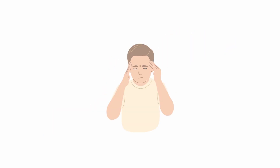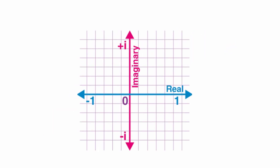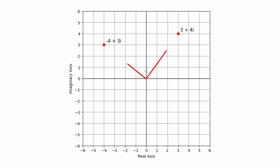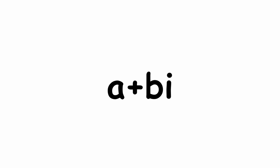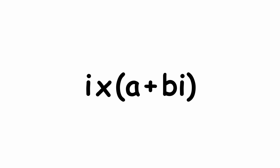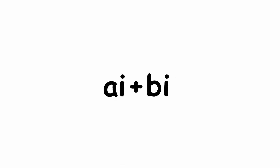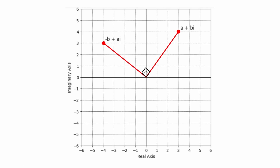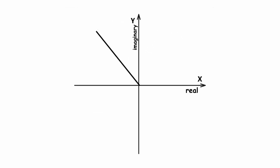Now for a geometric view. We can represent complex numbers as vector arrows. For both 3 + 4i and −4 + 3i, notice that the angle between them is a right angle — this is not a coincidence. For any complex number a + bi, i times (a + bi) = ai + bi² = −b + ai. Drawing both as arrows results in a right angle, with −b + ai always being a quarter turn, or 90 degrees, counterclockwise from a + bi. So multiplying a complex number by i results in a counterclockwise rotation by a quarter turn.